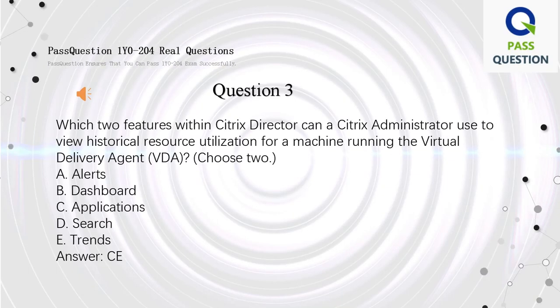Question 3. Which two features within Citrix Director can a Citrix Administrator use to view historical resource utilization for a machine running the Virtual Delivery Agent (VDA)? Choose 2. A. Alerts. B. Dashboard. C. Applications. D. Search. E. Trends. Answer: C, E.